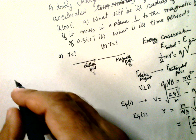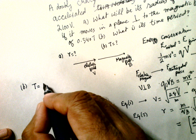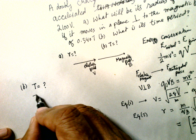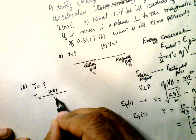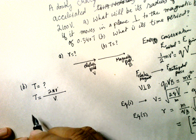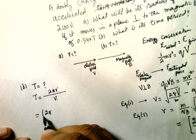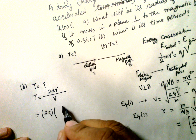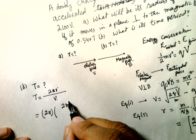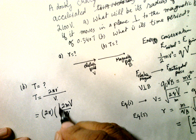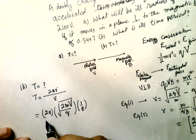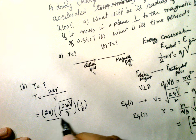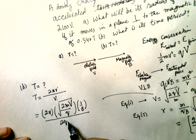Number two: time period. The time period T = 2πr/v, where 2πr is the circumference. Substituting r = (1/B)√(2mV/q) and v = √(2qV/m) into the formula: T = 2π × [(1/B)√(2mV/q)] ÷ √(2qV/m).